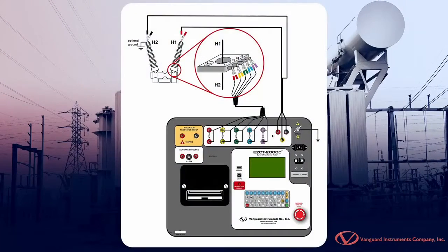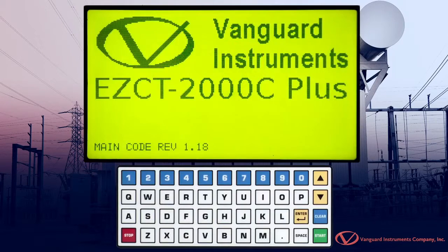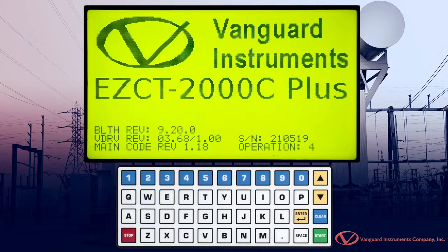To perform a ratio test, we'll make connections per this diagram. Once the connections have been made, we'll start from the unit's main menu.